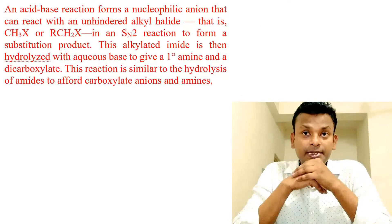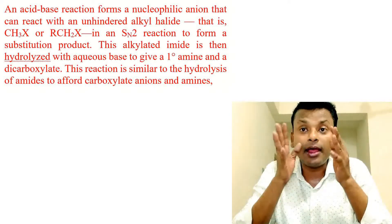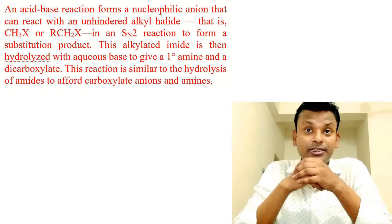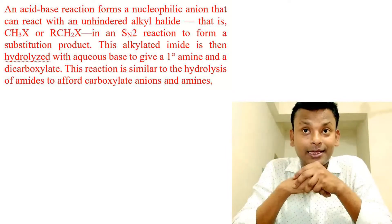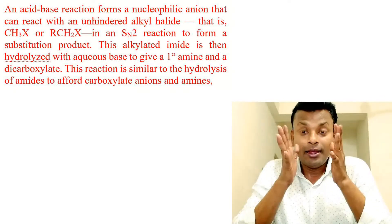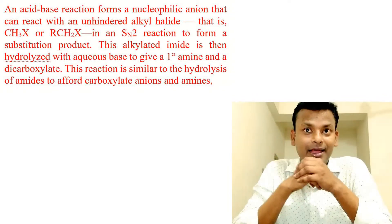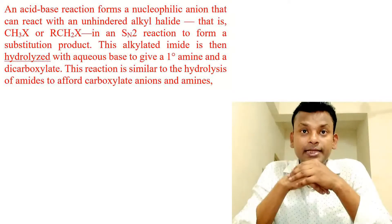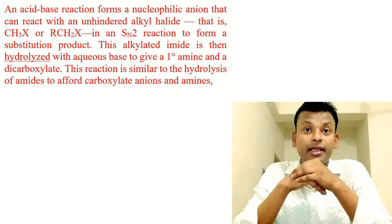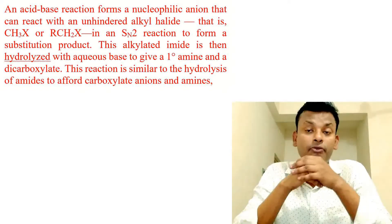An acid-base reaction forms a nucleophilic anion that can react with an unhindered alkyl halide — that is, less hindered alkyl halides such as CH3X or RCH2X, which are primary alkyl halides — in an SN2 reaction to form a substitution product. We know that SN2 reactions proceed for primary, less hindered alkyl halides. This alkylated amide is then hydrolyzed with aqueous base to give a one-degree amine and a dicarboxylate ion. This reaction is similar to the hydrolysis of an amide to afford a carboxylate anion and an amine.